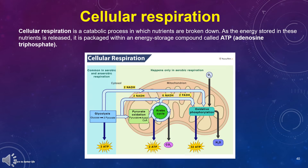Cellular respiration is a catabolic process in which nutrients are broken down. As the energy stored in these nutrients is released, it is packaged within an energy storage compound called ATP, adenosine triphosphate.